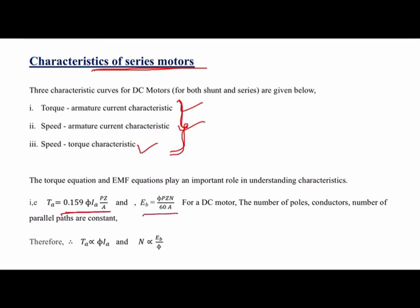These three characteristics can be studied using two equations we have already covered. First, torque developed in the DC motor: TA = 0.159 × (PZ/A) × φ × IA. Second, the back EMF equation: Eb = (φPZN) / (60A). In the torque equation, poles, Z, and parallel paths are constant, so torque depends purely on flux times armature current: TA ∝ φ·IA.